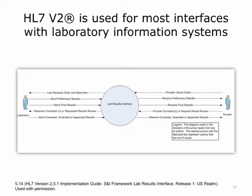We have been looking at a patient administration message, so now let's look at a laboratory message as an example. This picture is from an implementation guide and shows how the lab results flow might work. Implementation guides constrain standards and give more information. One constraint is that it is only for laboratory messages; another is that it requires all lab tests to be encoded using the LOINC standard terminology. In this scenario, the doctor sends an order to the lab results interface, which sends the order to the downstream system — the lab. The lab receives the order and specimen, sends preliminary results, and sends final results later. The provider could provide corrections to the result, creating a bi-directional workflow.